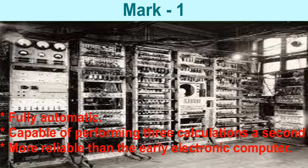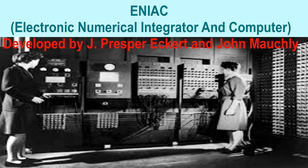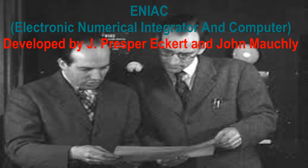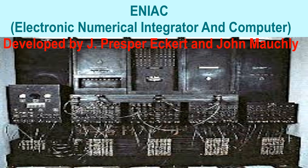It was also more reliable than the early electronic computers. ENIAC, that is Electronic Numerical Integrator and Computer, was the first fully electronic digital computer. It was developed by J. Presper Eckert and John Moakley. It contained approximately 17,500 vacuum tubes, occupied 680 square feet of area, and weighed more than 27,000 kg. ENIAC was initially not a stored program machine; it had to be reprogrammed by manual rewriting for each task.